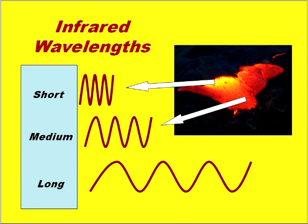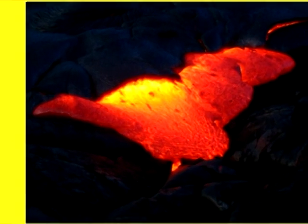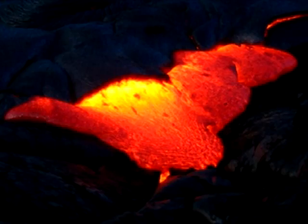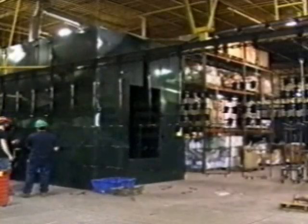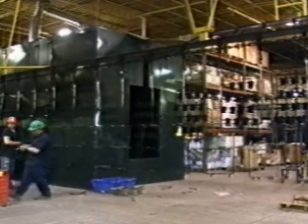As the lava cools down, it gets darker as less visible light is emitted, along with a shift to where most of the infrared wavelengths emitted are long-wave. This is important to know because the engineering of an infrared process heating system first involves selecting the radiant emitter or heater which best suits the material requiring heat.